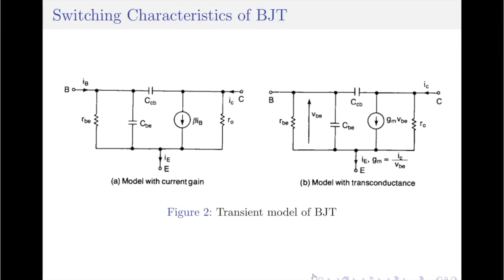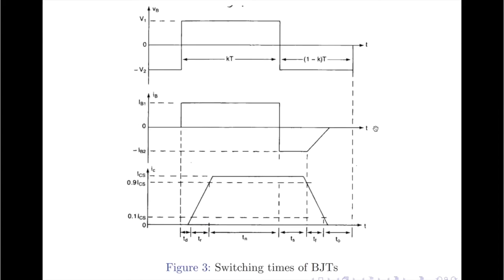The transistor model under transient conditions is illustrated in Figure 2, where the collector-to-base junction and the base-to-emitter junction capacitances are Ccb and Cbe respectively. The ratio of Ic to Vbe is known as the transconductance, denoted by gm, of a BJT. The junction voltages and physical construction of the transistor are based on these capacitances.